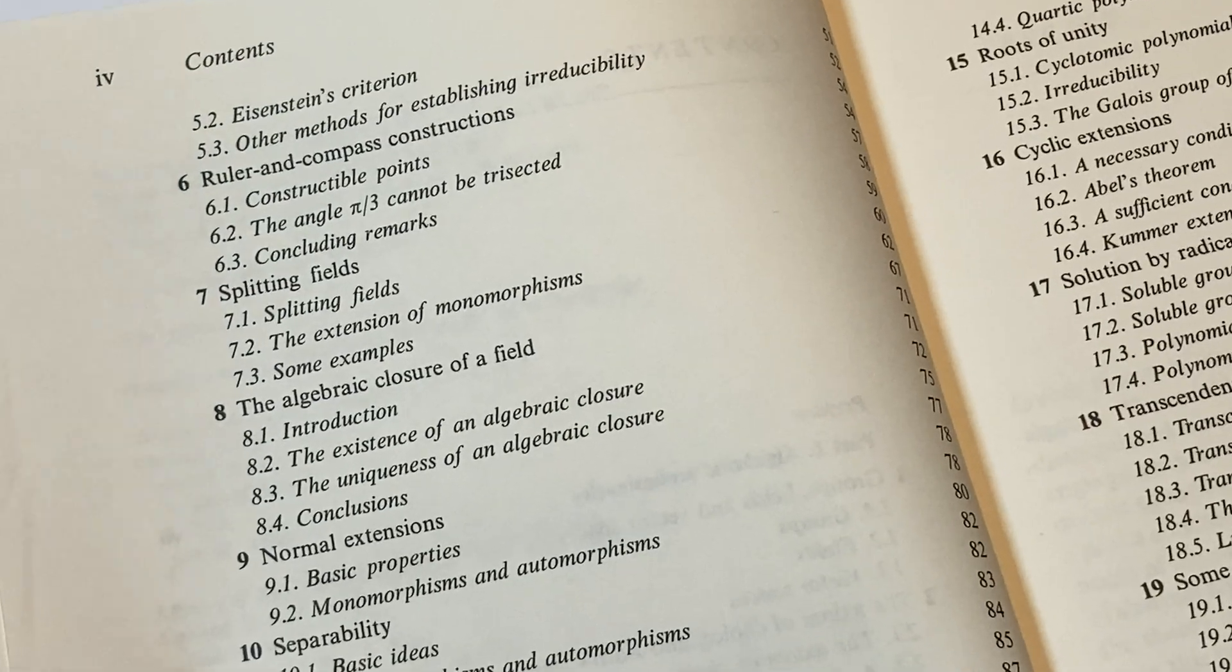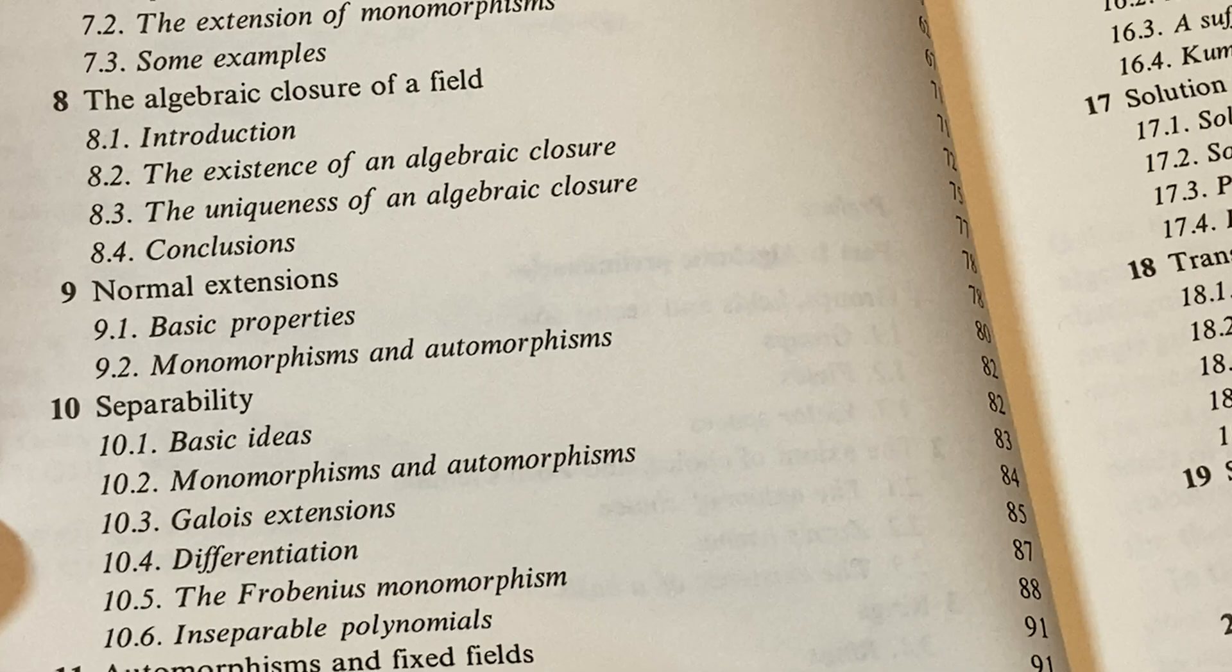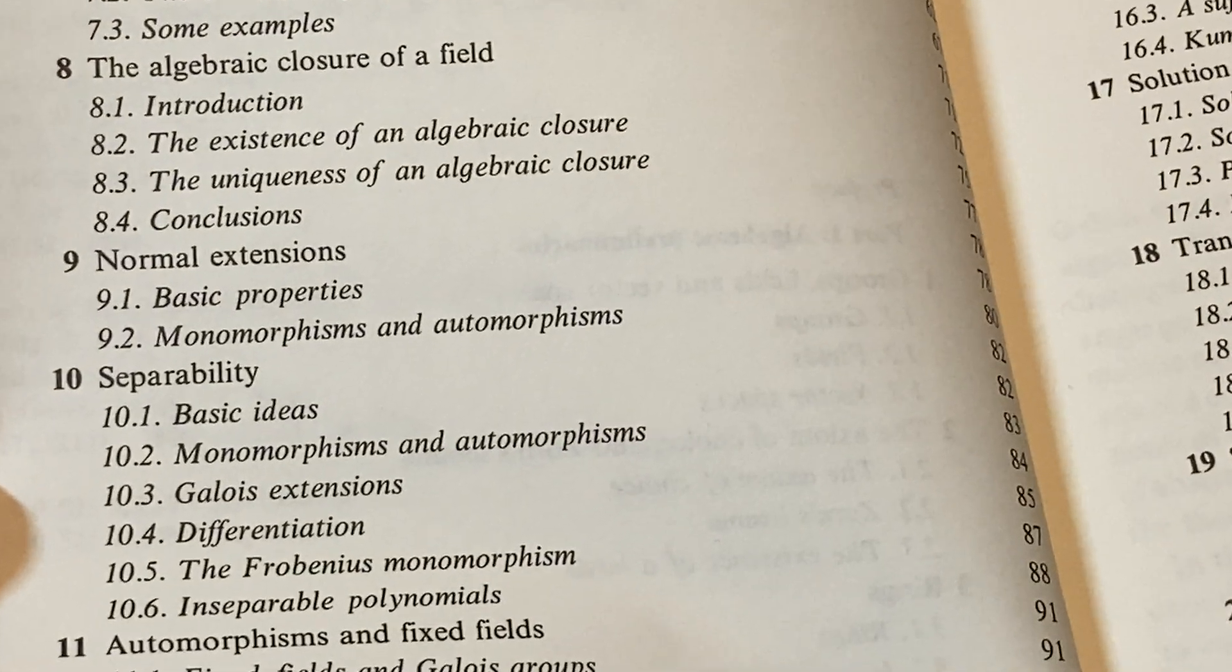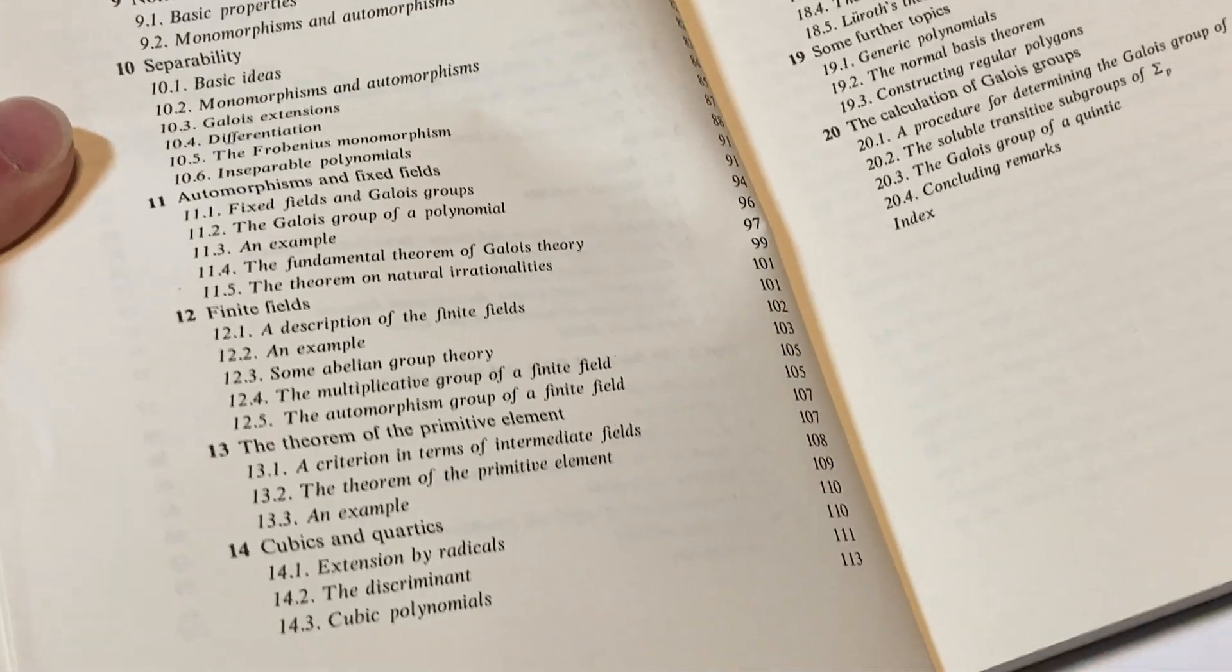Then we have Eisenstein's criterion, splitting fields, the algebraic closure of a field, normal extensions, separability, automorphisms and fixed fields, finite fields. All really good stuff.